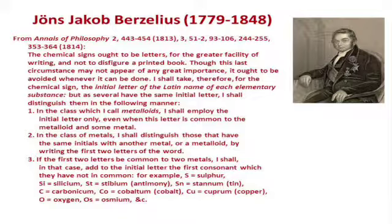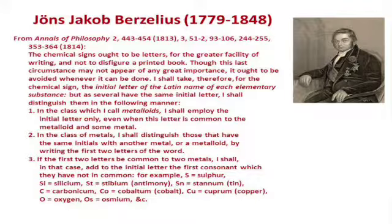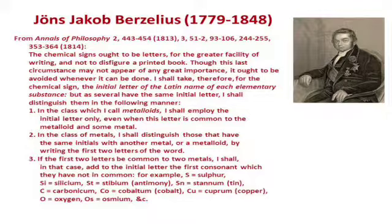Let's go through each property one by one. Metallic lustre is the property by which a metal shines. Now many things shine — when we polish our shoe it shines, glass shines. But what is the difference between these types of shine? Other shines are because of reflection of light, whereas metallic lustre is because of continuous emission and absorption of energy from the environment by the valence electrons.